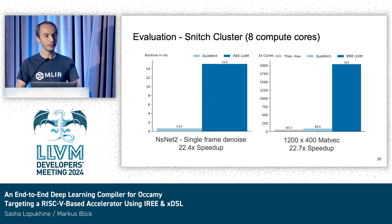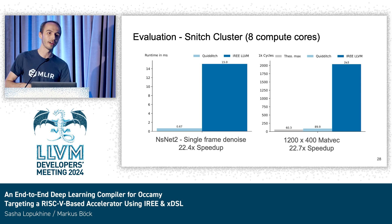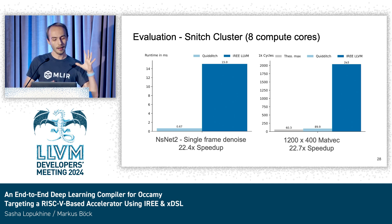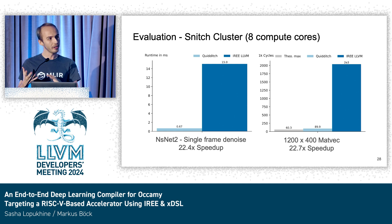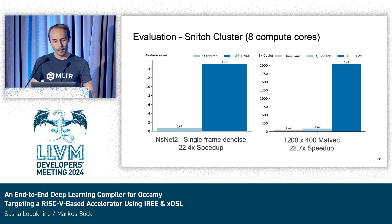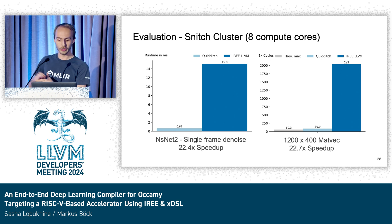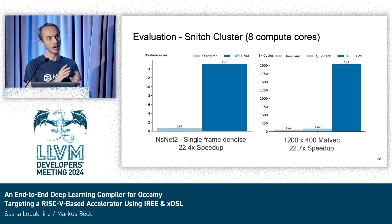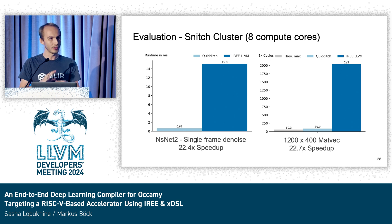For evaluation, we tested all of this on a hardware simulation with Verilator of a single Snitch cluster — eight compute cores — and compared it to Erie's existing LLVM backend, which is not aware of our RISC-V extensions and cannot do tiling based on our L1 memory. On the left, executing NSNet2, a recurrent neural network for audio denoising processing a single frame, we see a 22.4x speedup. On the right, zooming into the biggest kernel of NSNet2, our Quidditch solution takes about 90k cycles for the MATVEC while LLVM takes around 2 million. The theoretical minimum is 60k cycles, so we're not perfect yet but relatively close, with some low-hanging fruit still to address.